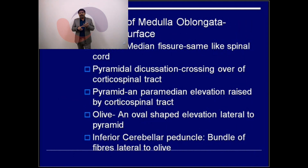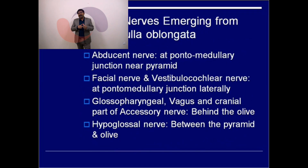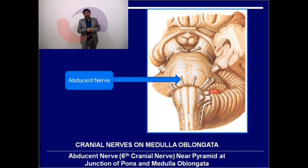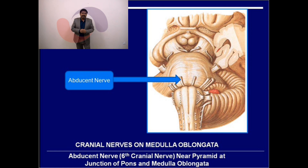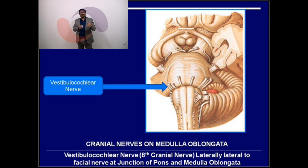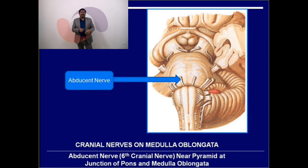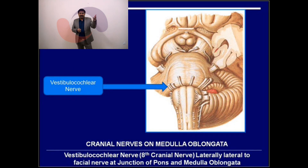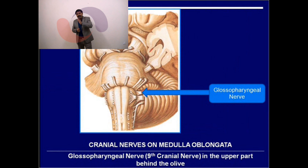On the anterior surface we have seen: the anterior median fissure, pyramidal decussation, pyramid, olive, and inferior cerebellar peduncle. Now, the nerves emerging from the medulla oblongata: at the pontomedullary junction, the abducent nerve (CN VI) is the most medial, close to the pyramid. Lateral to it is the facial nerve (CN VII), and still more lateral is the vestibulocochlear nerve (CN VIII).